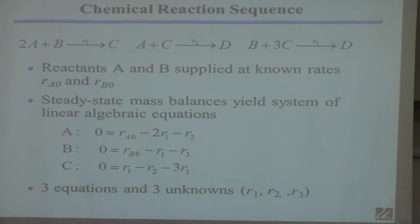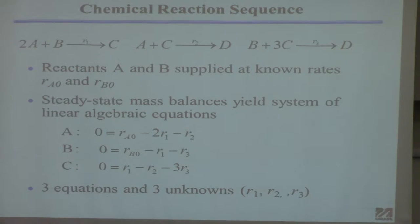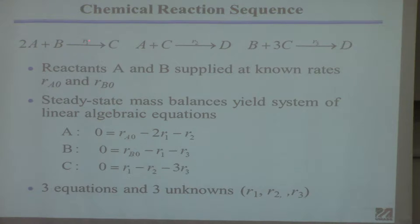Here's a problem from stoichiometry. I've got a series of reactions with two reactants A and B, and two products C and D. This is the reaction rate of the first, second, and third reactions. C is produced in the first reaction and then consumed in the two subsequent reactions. I'm assuming I supply A and B at some known rates — like moles per minute.